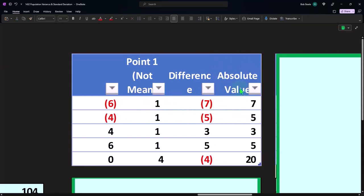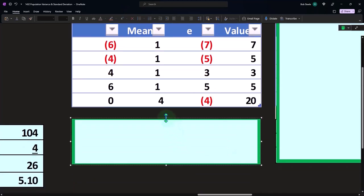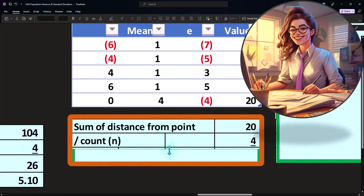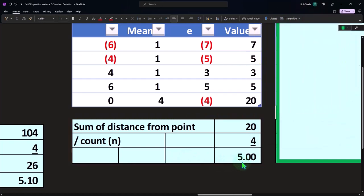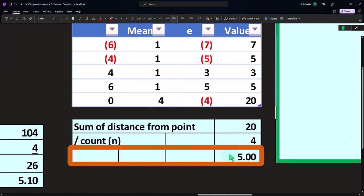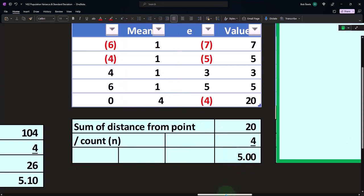If I take the absolute value of those numbers, I'd still come out to 20. Then if I do the rest - take the 20 and divide by four - I still come out to five. So notice I don't have a unique number here when I pick the mean as the middle point as opposed to when I pick some other number when using the average deviation.